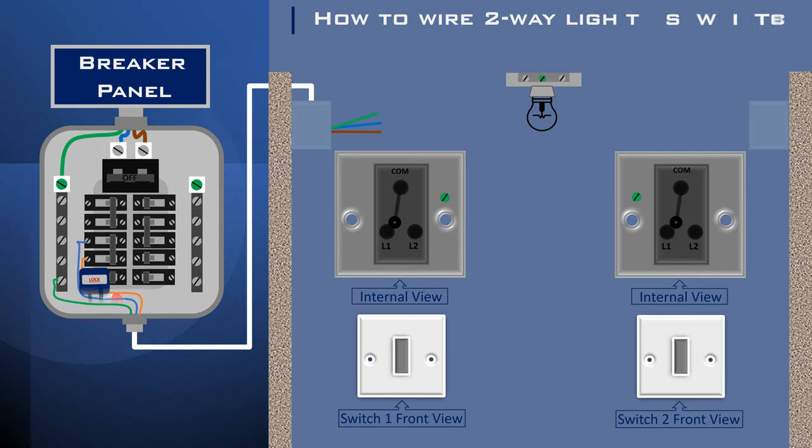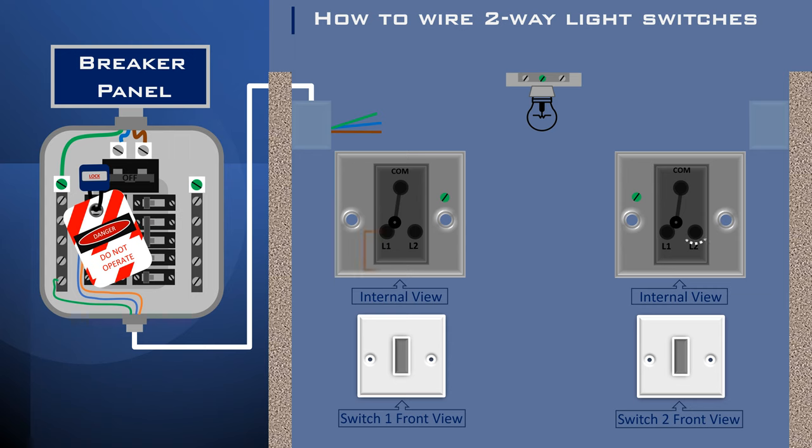With the main breaker off and lockout tag out, connect the brown wire to L1 terminal of the first switch and to the L2 terminal of the second switch. Between the two switches, connect L2 of switch 1 and L1 of switch 2.